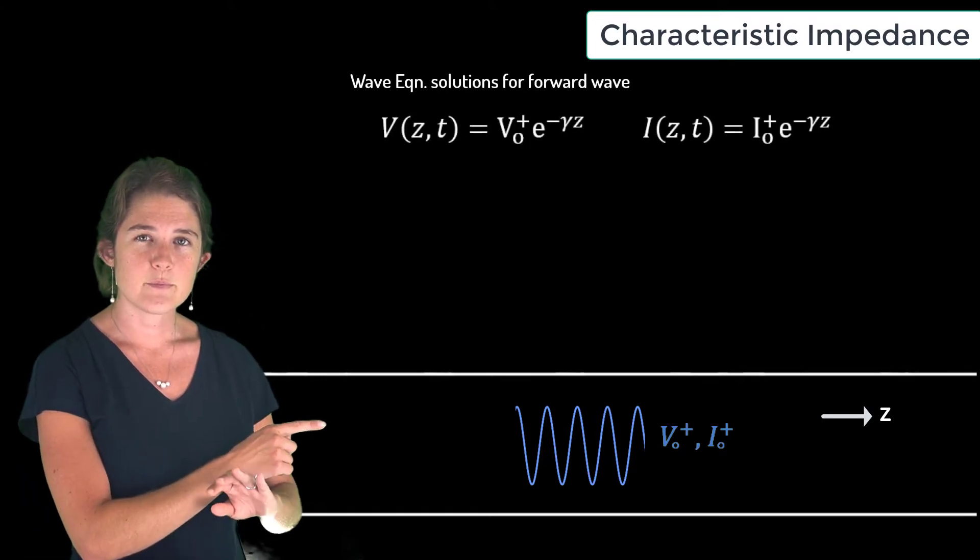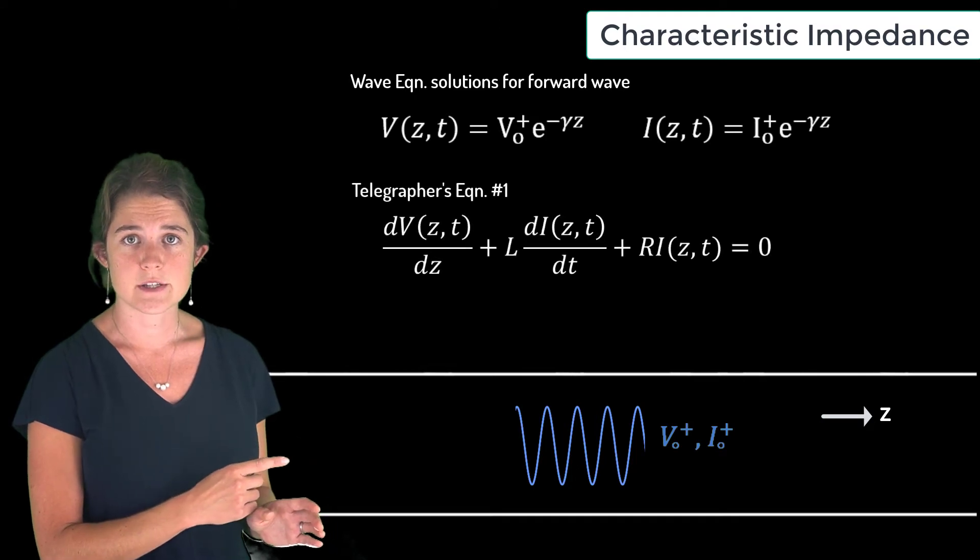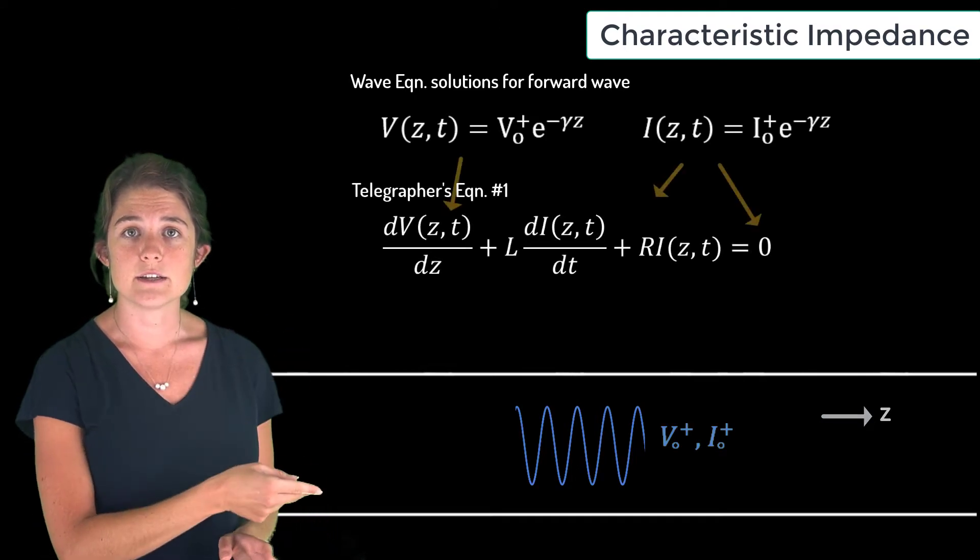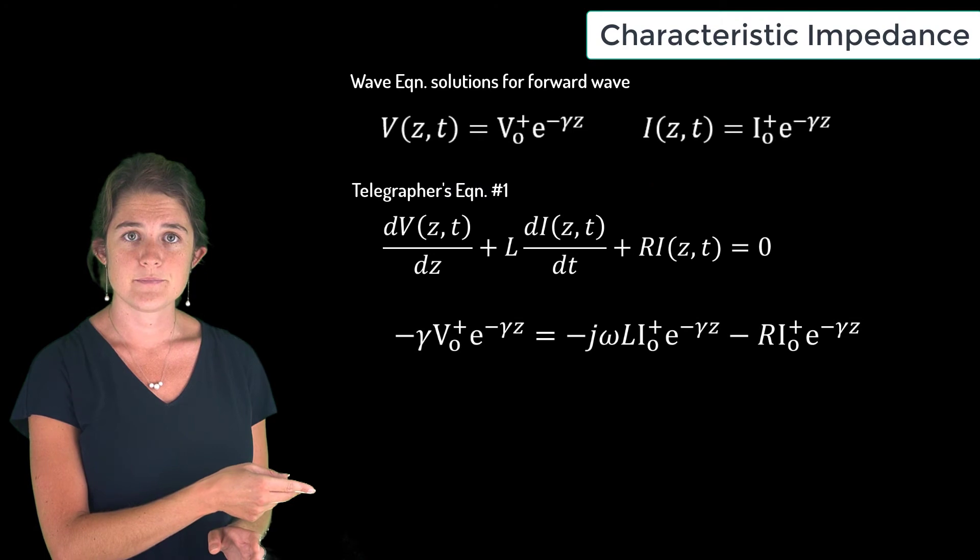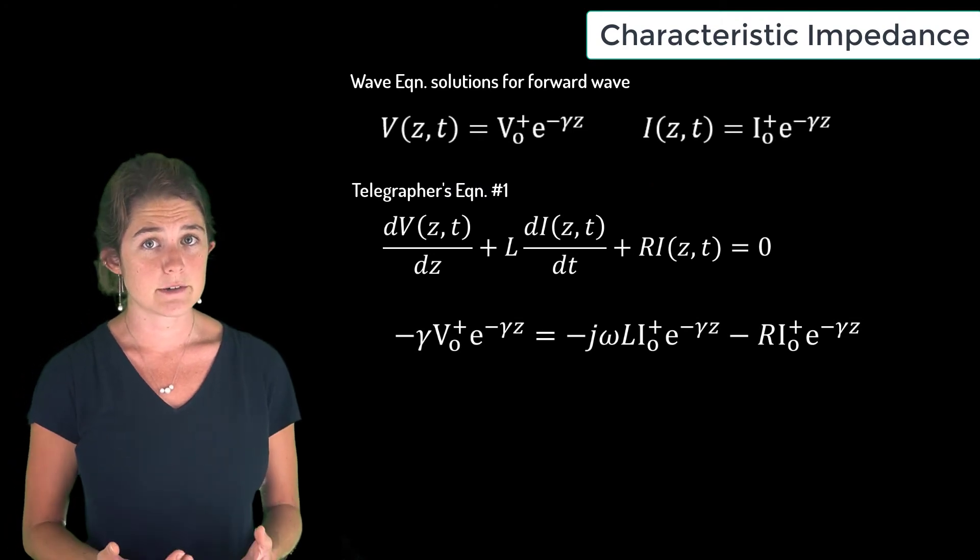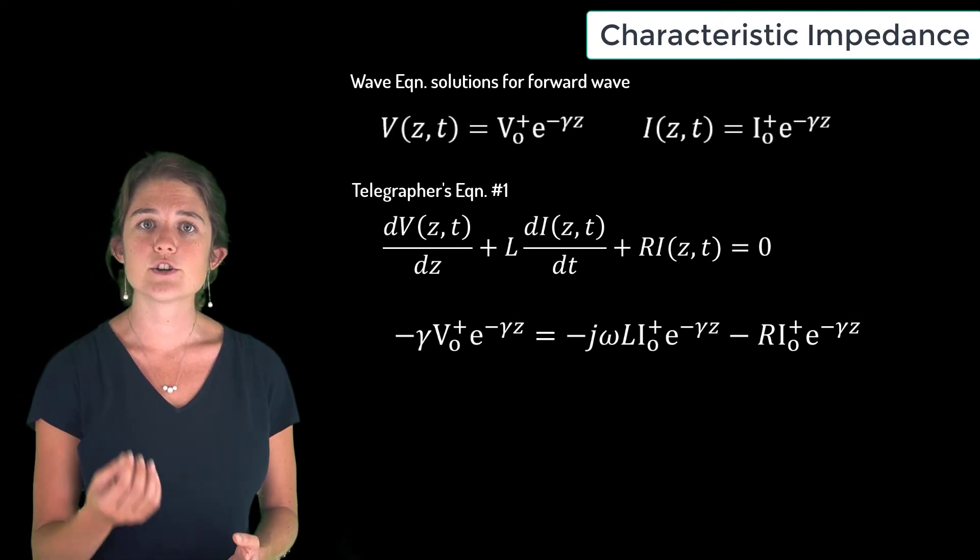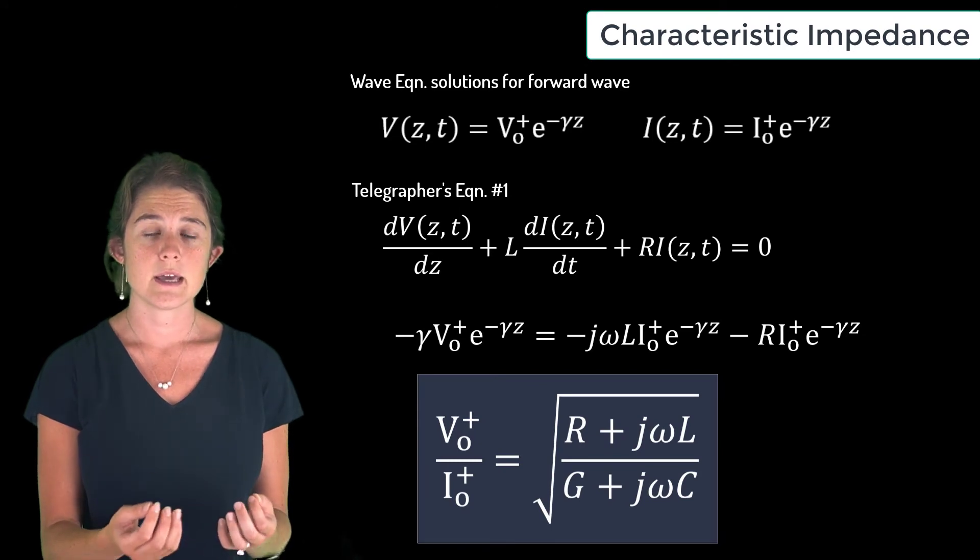If we look back at the first of our two telegrapher's equations, we can plug these solutions in to obtain this expression. This expression can be rearranged to show that the ratio of forward voltage to forward current is equal to the square root of R plus jωL over G plus jωC.